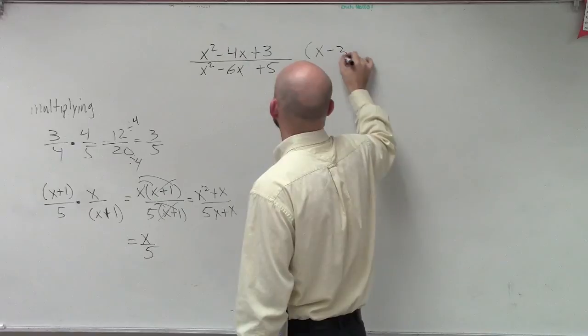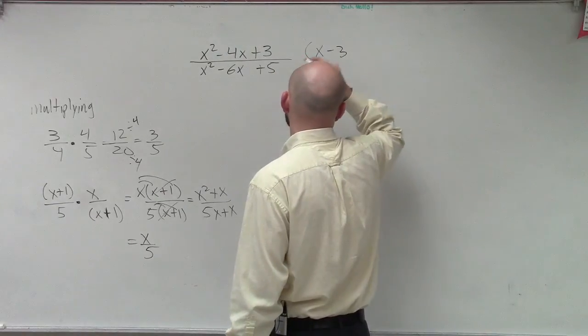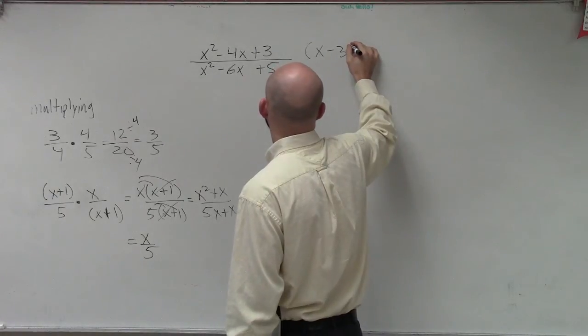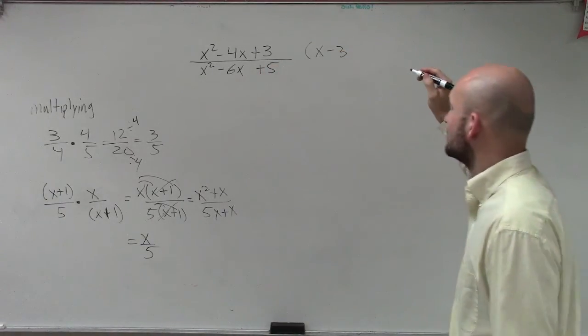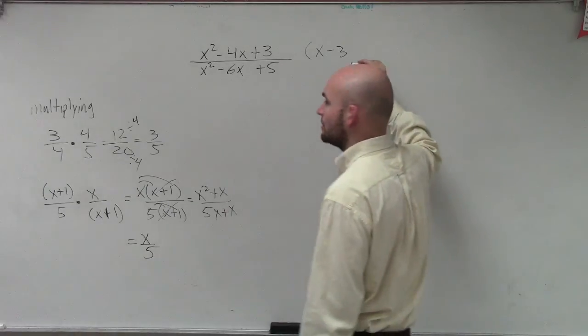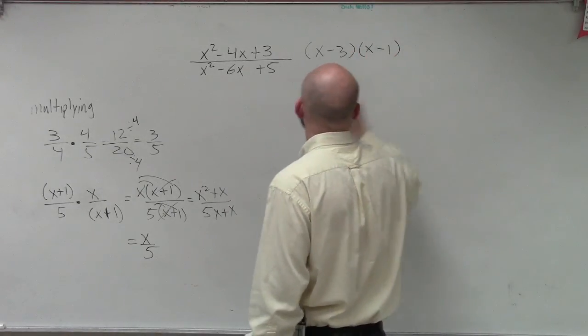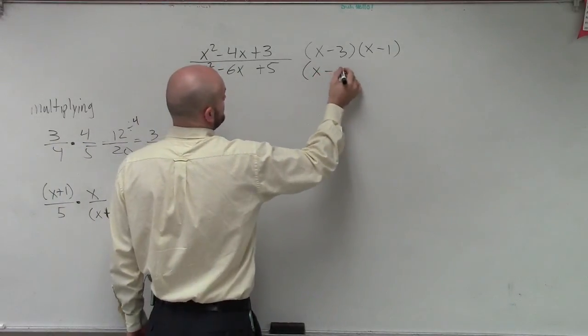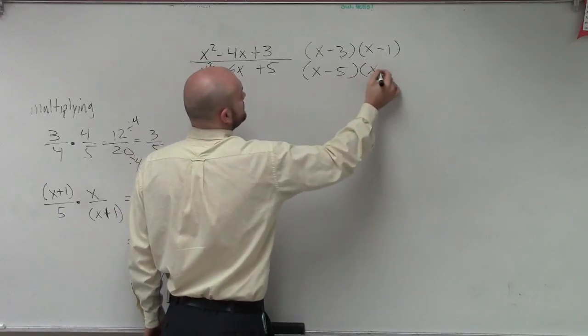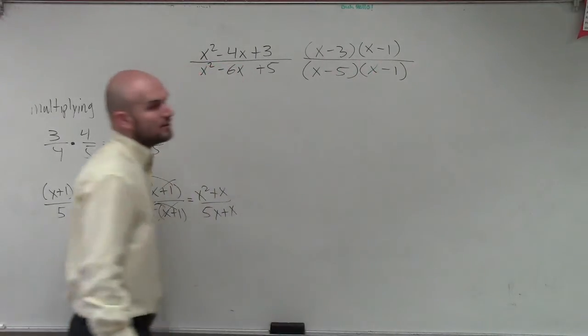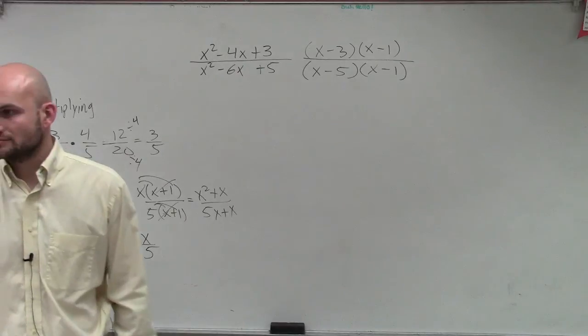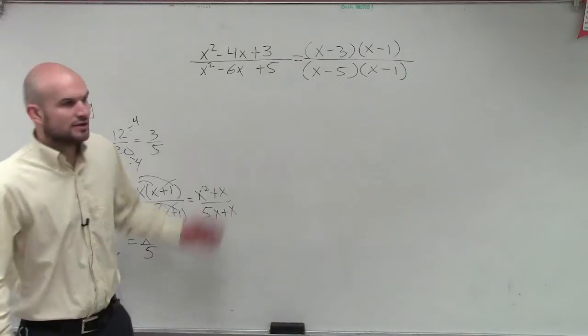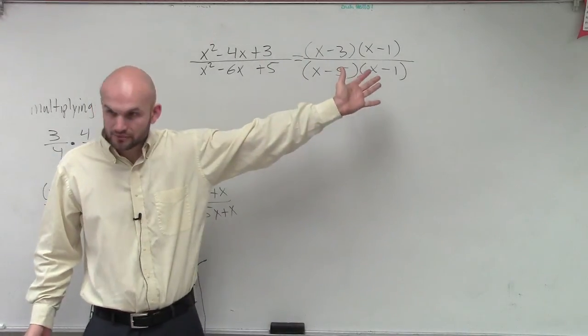So let's factor the top. X²-4x+3 factors to (x-3)(x-1). Then, on the bottom, x²-6x+5 factors to (x-5)(x-1). Now, in factored form, do you guys now see, are these equal? Are they the same? Just one is in factor form, one is not, right? Yes.